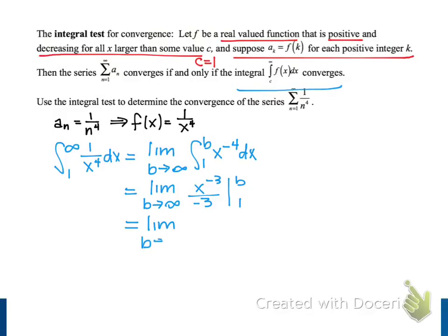So when we evaluate this at x equals b, we get 1 over negative 3 b cubed. I move that back down to the denominator, so we'd have a positive exponent. And then when we evaluate at x equals 1, we're going to subtract 1 over negative 3.